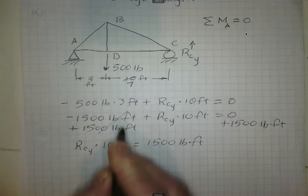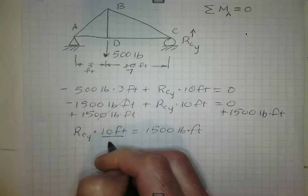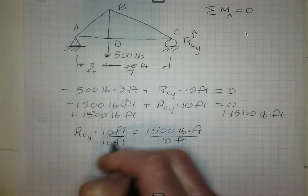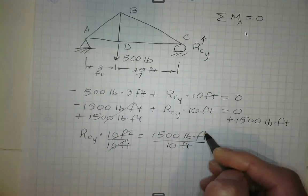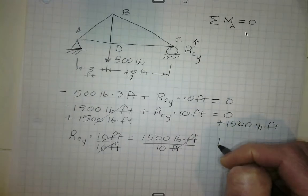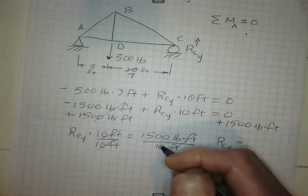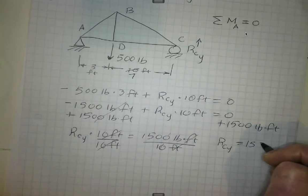And then, again, we can just divide by 10 feet on both sides to get... Again, feet cancel on this side. The reactionary force at point C in the y direction is equal to 150 pounds.